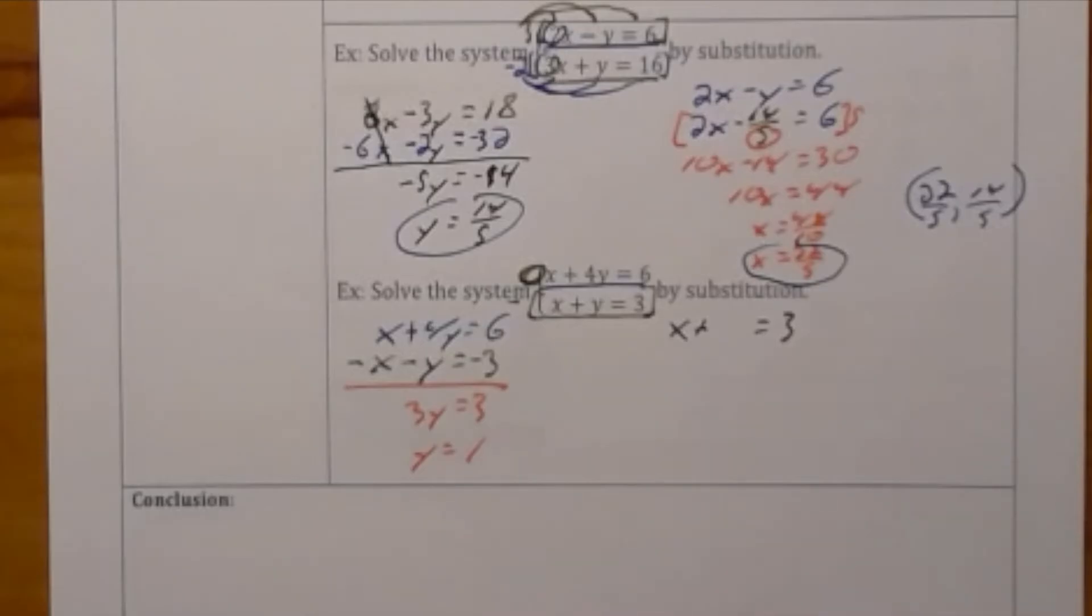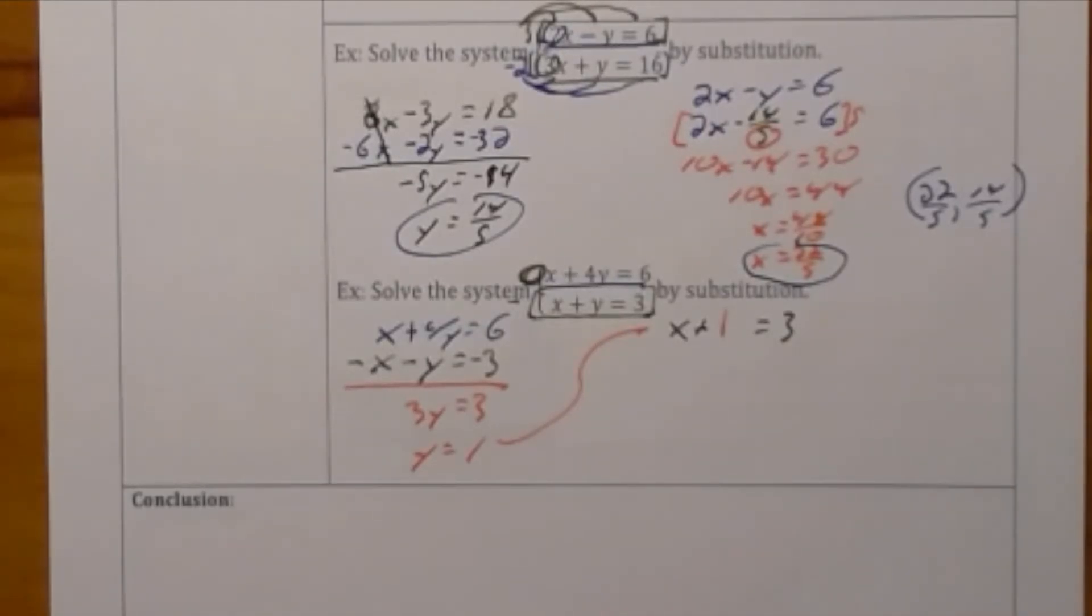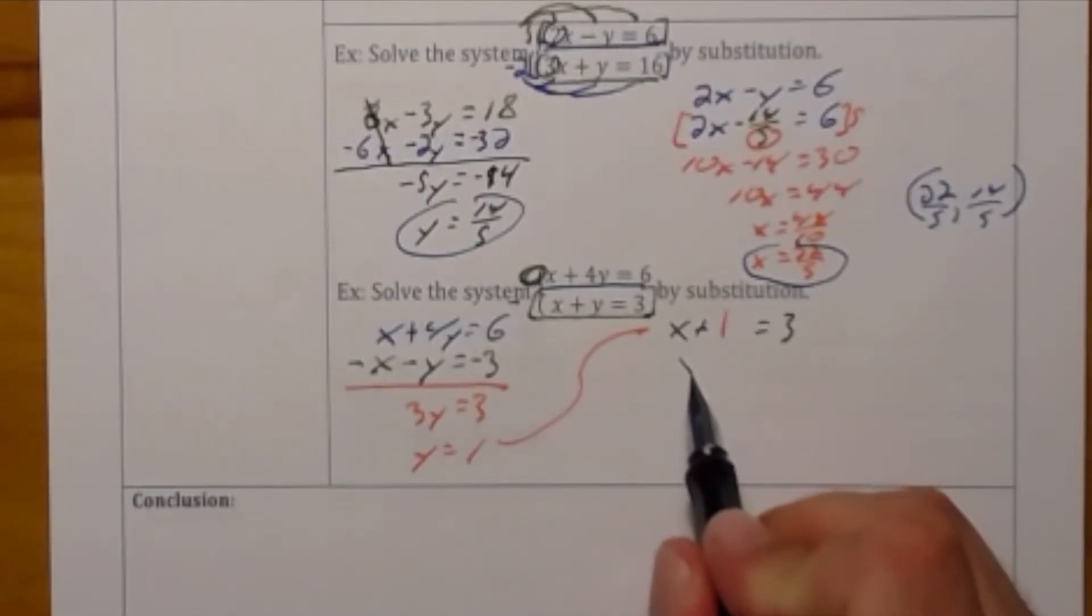Knowing what y is I'm going to substitute it into one of the original equations and I've chosen the green equation because it looks simpler. So x plus 1 is equal to 3.